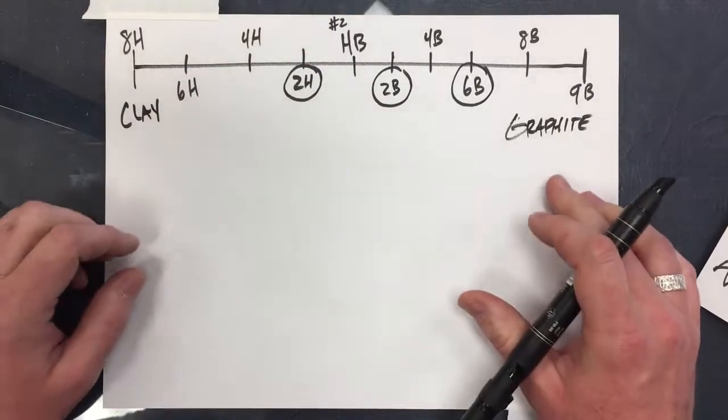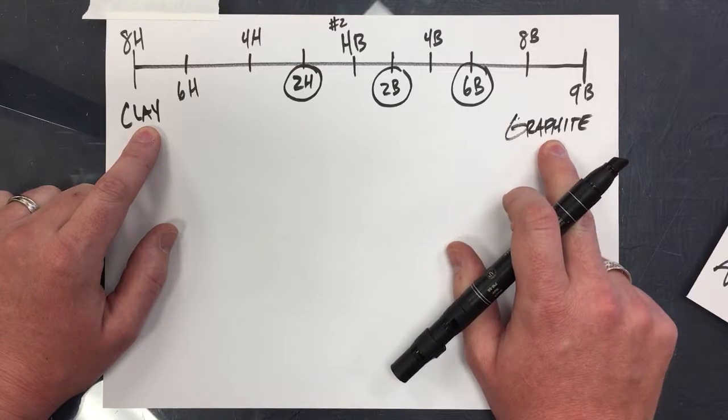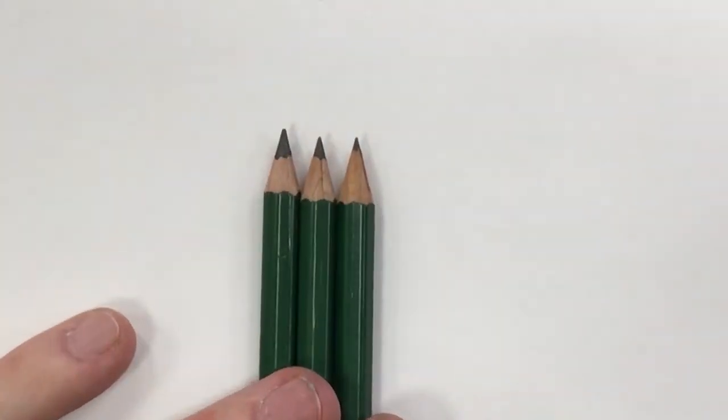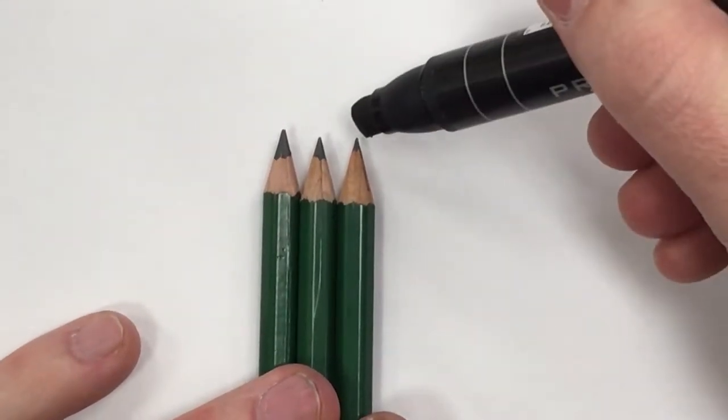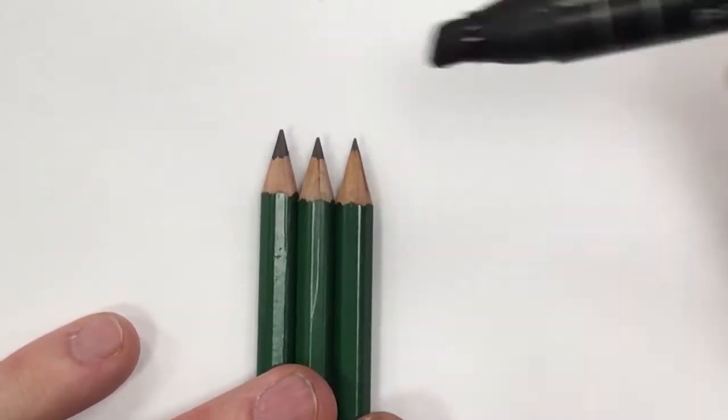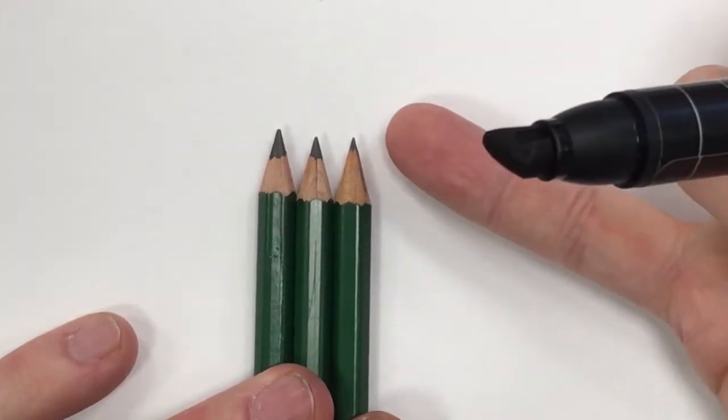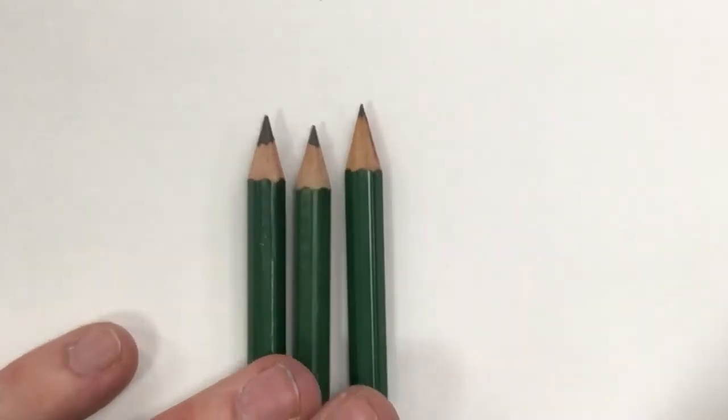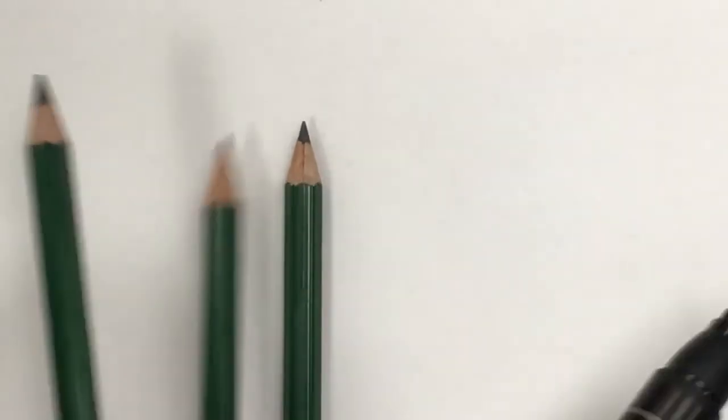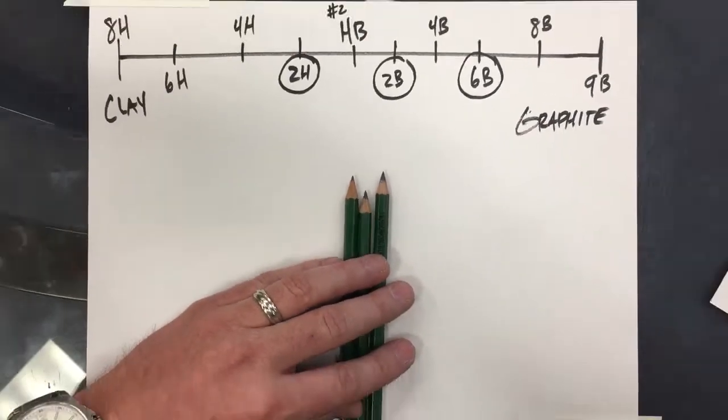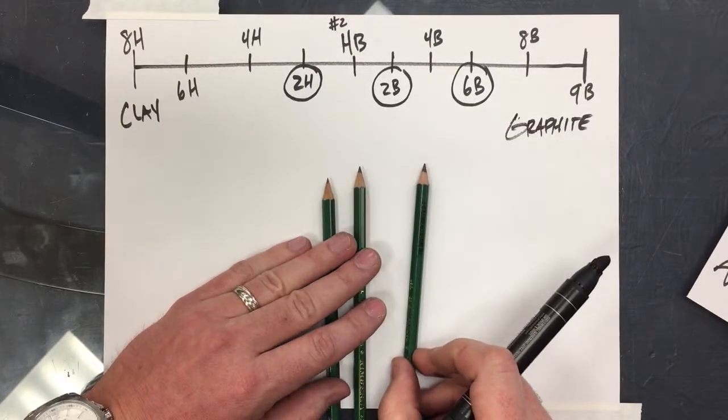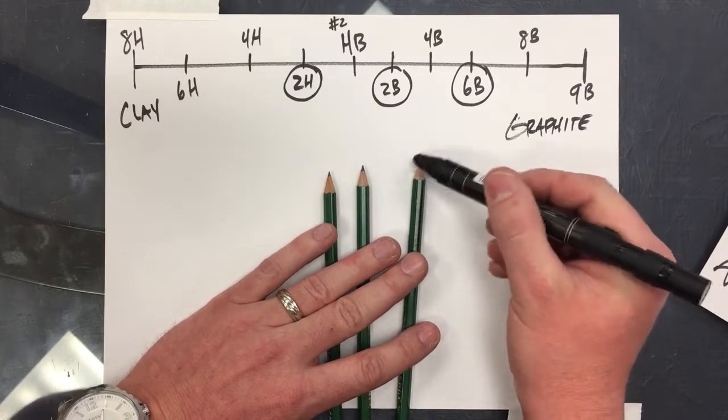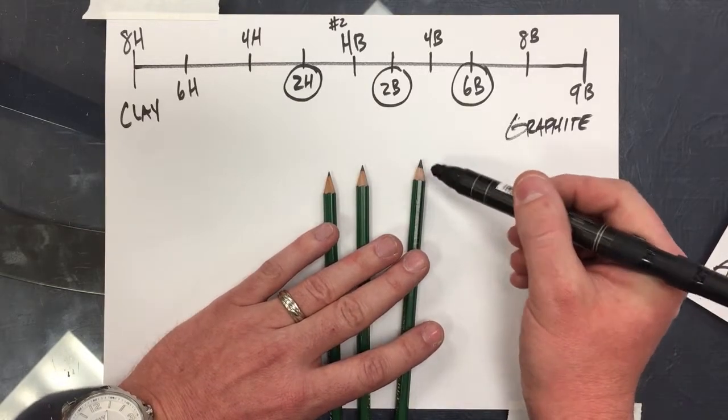Clay is what makes the graphite hold together. Now maybe you've noticed, back to these—this is 2H, this is 2B, and this is 6B. You can see that the lead here is much smaller than the lead in the 6B. Maybe we'll switch them around so that they match up with the graph above. So 6B needs a lot more graphite to clay to make this stay together but stay dark.